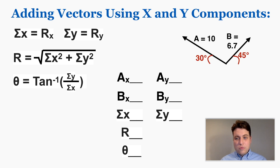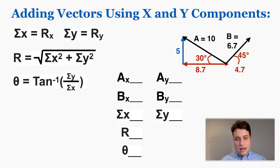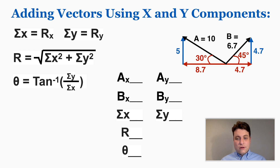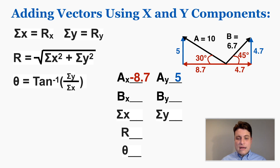Let's say we have these two vectors and we want to find their sum. I don't have to connect them tip to tail — I just find their x and y components and add them together, which is equivalent. It's important to remember that right and up are positive, and left and down are negative. For vector A, the y component is positive 5 (pointing up) and the x component is negative 8.7 (pointing left). For vector B, both the x and y components are 4.7, pointing right and up, so both are positive.